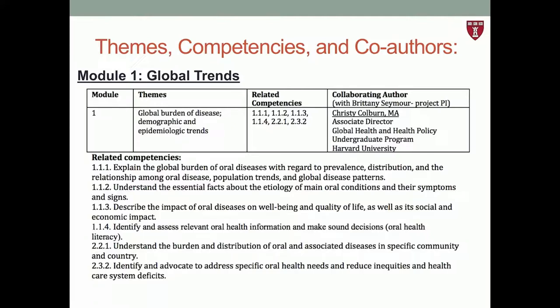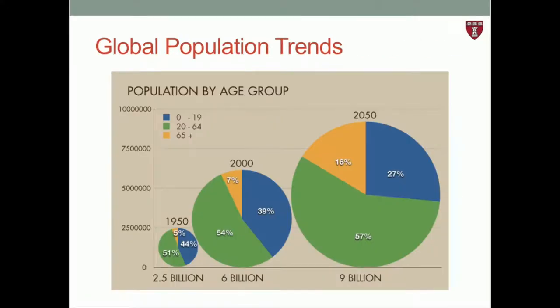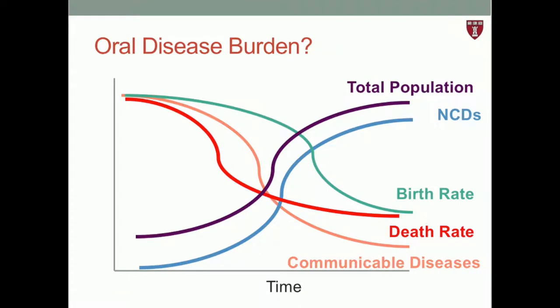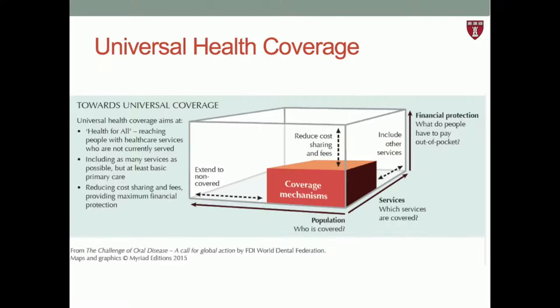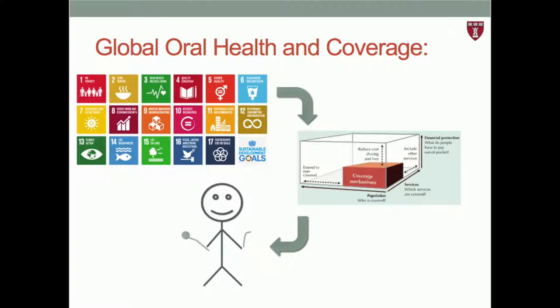Module one is titled Global Trends, and it was co-authored with Christy Colburn. It is related to selected competencies from the global oral health competency matrix, and it covers topics like the global burden of disease, demographic and epidemiologic trends and transitions, and how those impact oral health. Module two is titled Global Goals, co-authored by Dr. John Dono, and covers an introduction to health systems and policy, global health institutions, and the millennium and sustainable development goals.